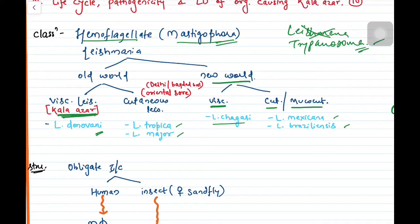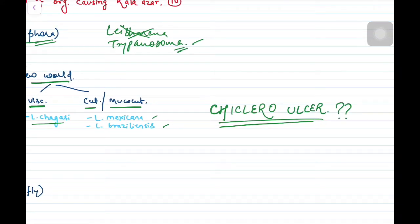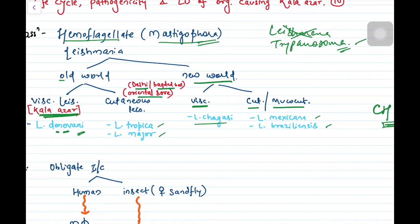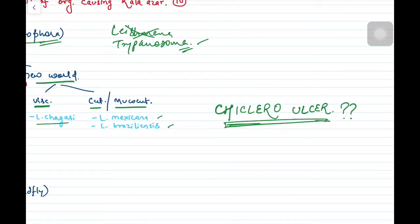Old world Leishmania donovani and new world Leishmania chagasi are boring words. But in cutaneous it is very fascinating words - tropica and major in old world, mexicana and braziliensis in new world. This cutaneous leishmaniasis is also known as Delhi or Baghdad boil or oriental sore. Now let me ask you a question: chichero ulcer is caused by which Leishmania? Write down in the comments and after this video I will tell you the answer.